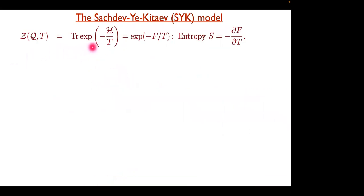For a given value of q, the partition function is the trace of the exponential of minus the Hamiltonian divided by temperature. As usual this defines the free energy F, which will be of order N. The entropy is thermodynamically defined as the derivative of the free energy. This is really a counting problem — I have to count states with each energy and combine them with a Boltzmann weight given by the temperature.